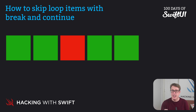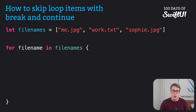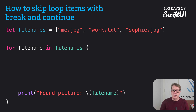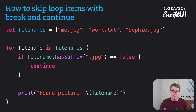Continue is commonly used at the start of loops where you want to check your loop variable and eliminate variables that don't pass a test of your choosing. For example, we could have an array of file names: me.jpg, work.txt, and sophie.jpg. Then for each file name in file names, we want to print out all the ones that are pictures. So we say print found picture file name. But if the file name doesn't end with .jpg, it's not a picture we care about, so we skip that loop iteration. We can say if file name has suffix .jpg is false, continue.